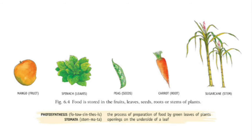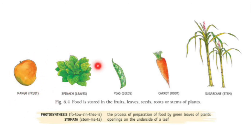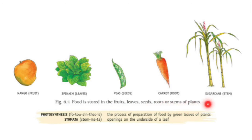Here are a few pictures of food that we have already seen in our lifetime — mango fruit, spinach, peas, carrots, and sugarcane. Plants store their food in the form of fruit, leaves, seeds, roots, and stems. So any part of the plant you take, plants can store their food in that part.